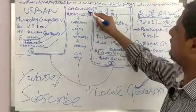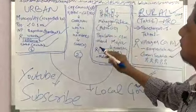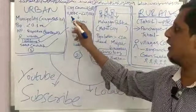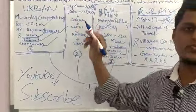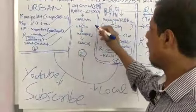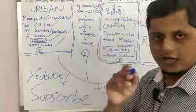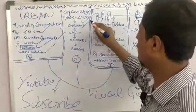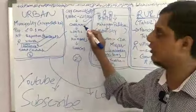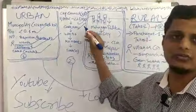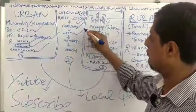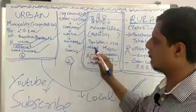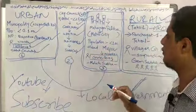Then we will come to city council. The population for a city council should be 11,000 to 25,000. The head of the city council is a chairman. They also have wards with members and a Sabha.